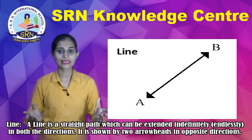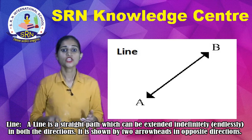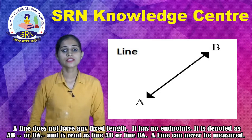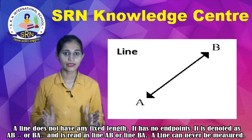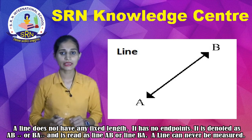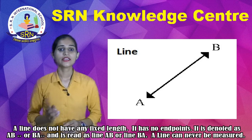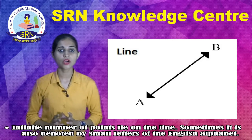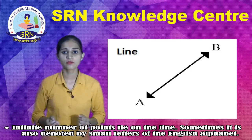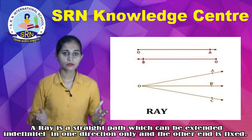Number two is Line. A line is a straight path which we can extend indefinitely in both directions. It is shown by two arrowheads in opposite directions. A line doesn't have any fixed length and has no endpoints. It is denoted as AB or BA and is read as line AB or line BA. A line can never be measured. An infinite number of points lie on the line. Sometimes it is also denoted by small letters of the English alphabet.